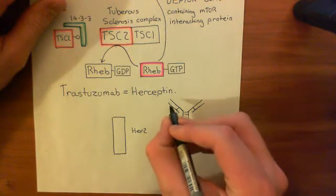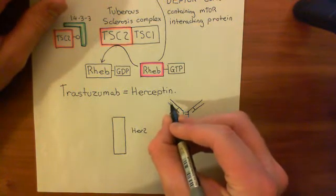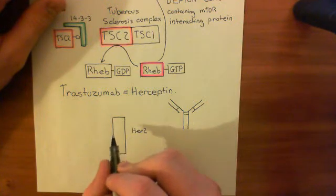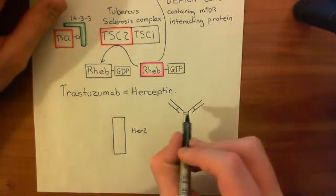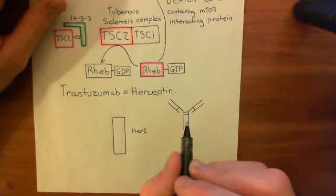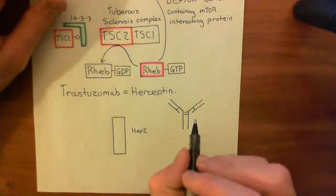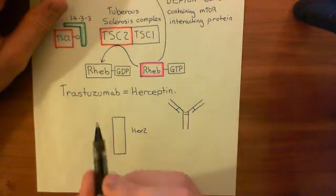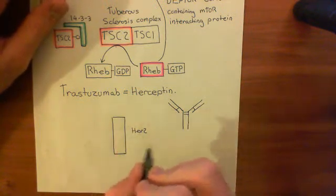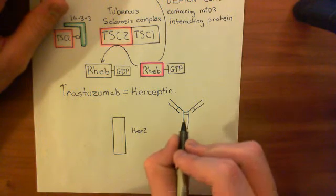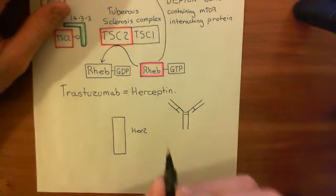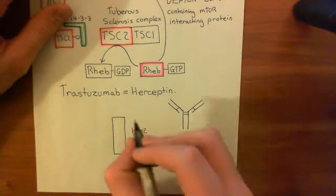So basically what's going to happen is these antibodies have variable regions which can bind to epitopes of other proteins. So trastuzumab is a monoclonal antibody, which means that all of the antibodies bind to a single epitope of the protein, and it's targeted against HER2. So trastuzumab is an anti-HER2 antibody.